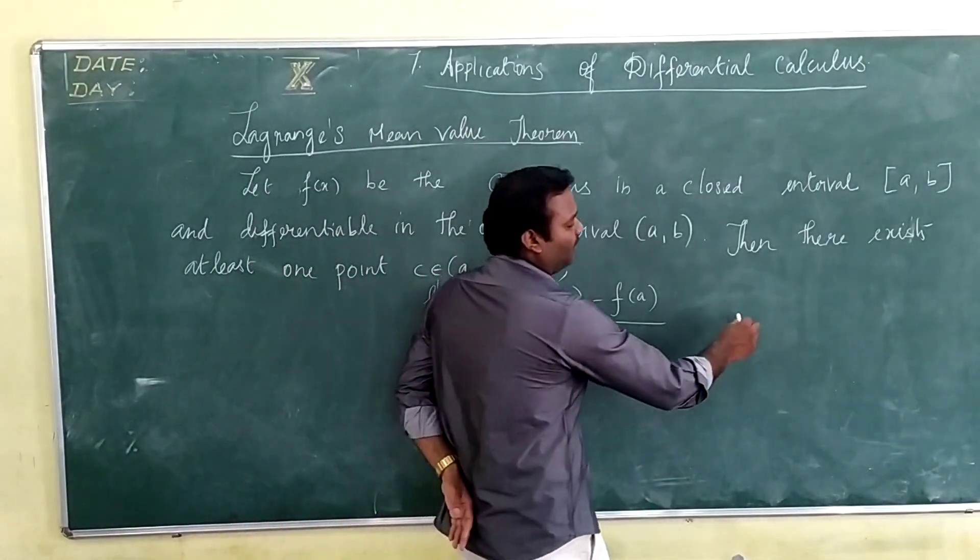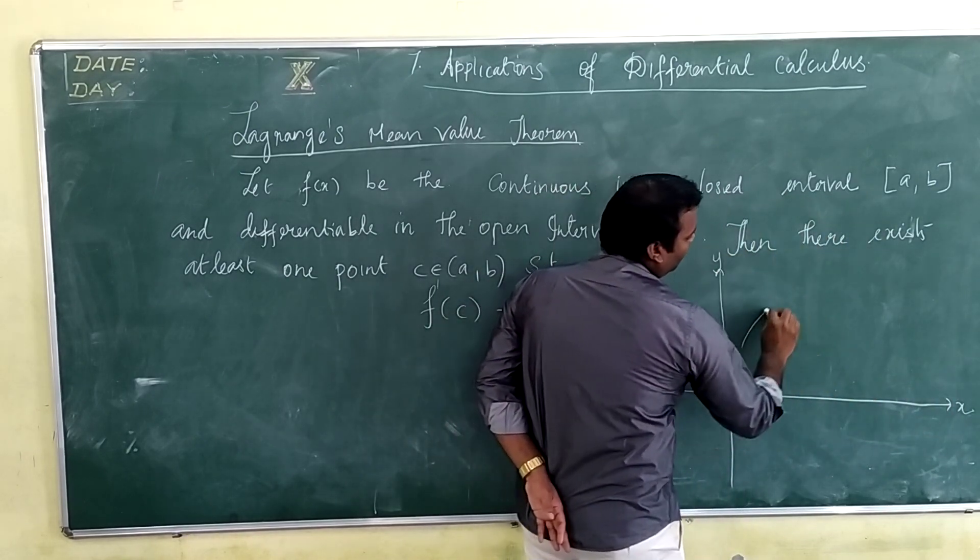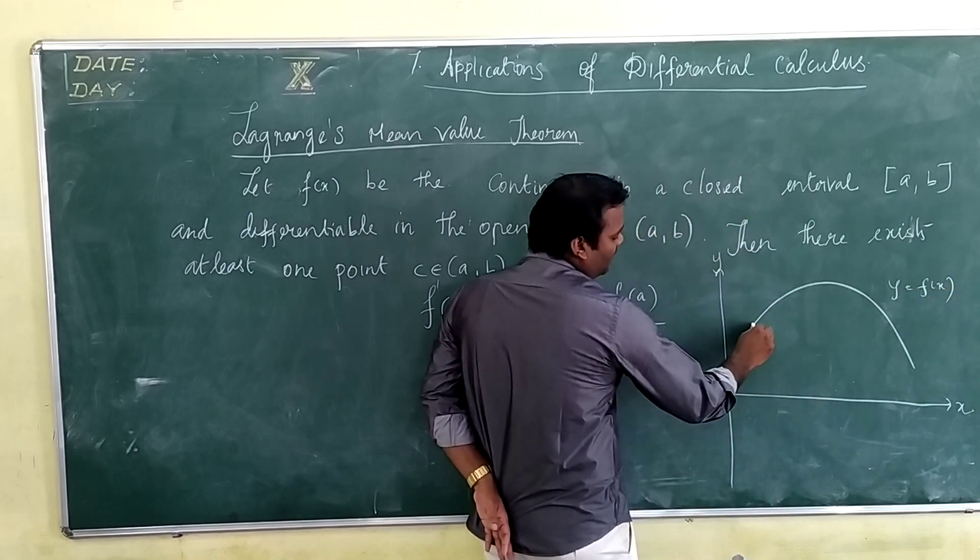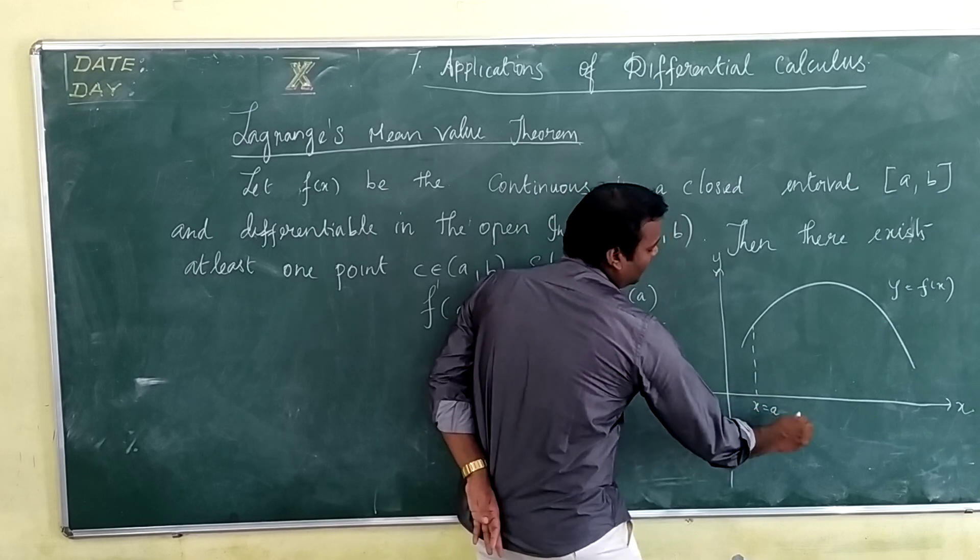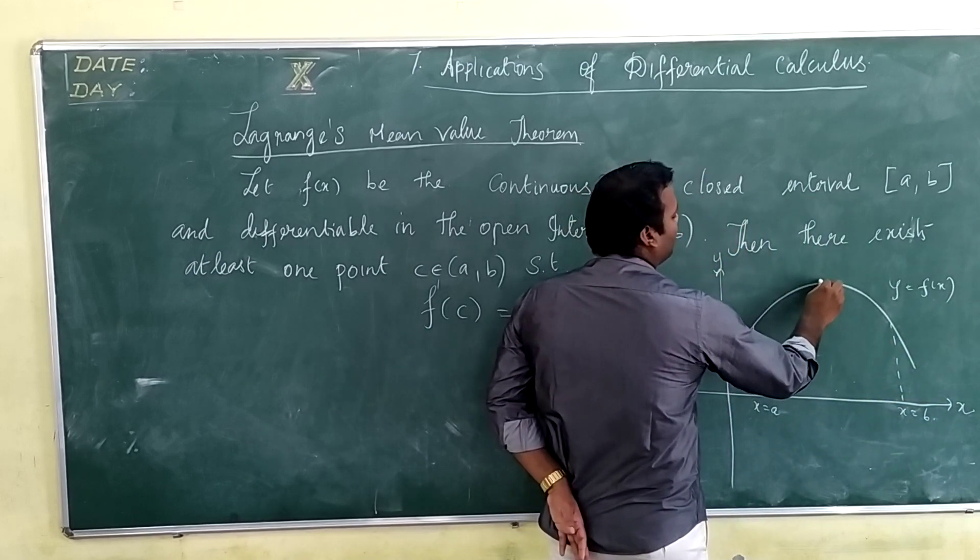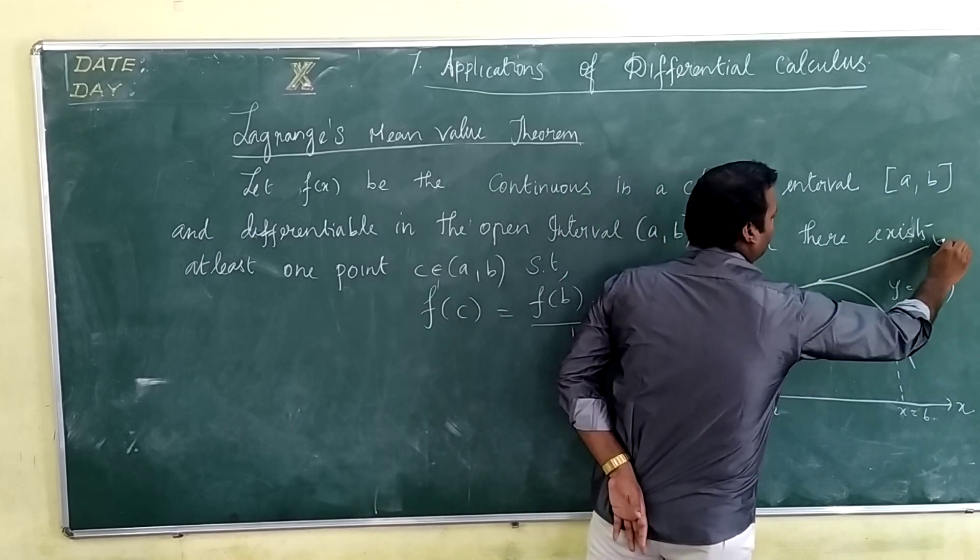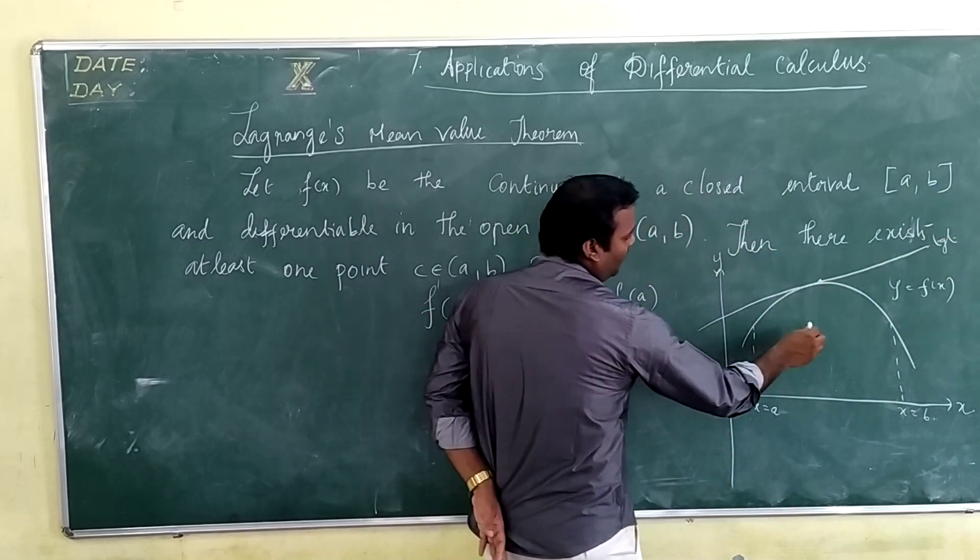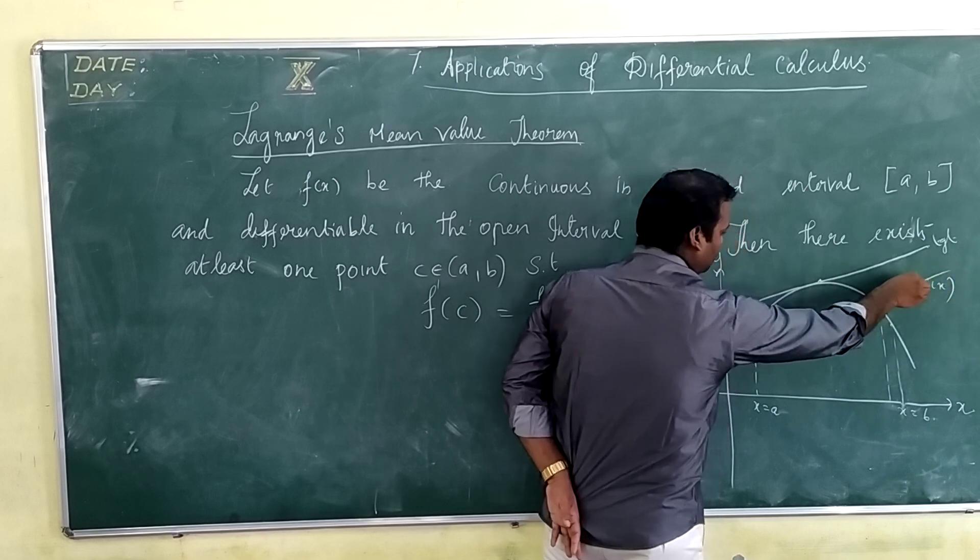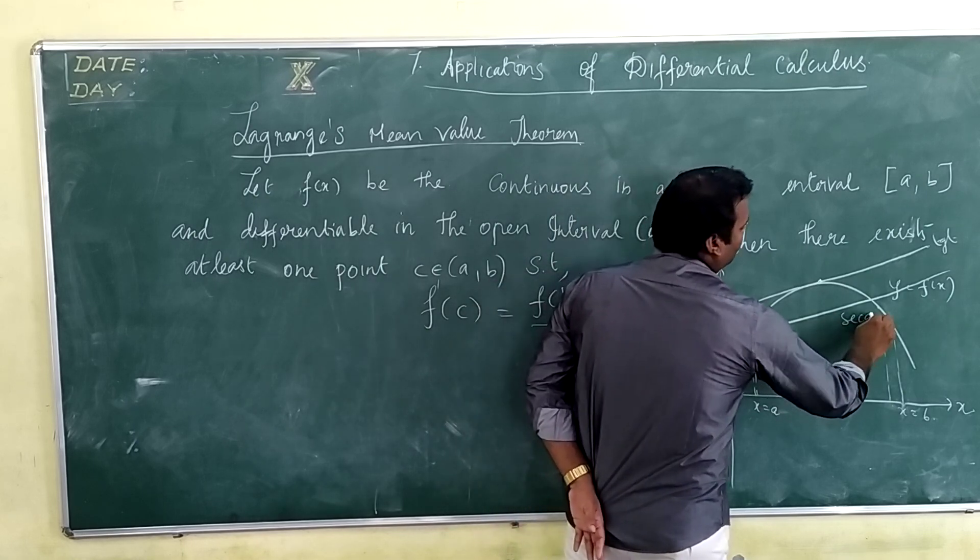So what is the main essence of this theorem? Suppose if you take a function y equals f(x), the given function, in which you are having two points - limiting points x equals a and the other endpoint x equals b. In the beginning you are having a point with the tangent line. So this is the tangent line. And also you are having another line, which is the secant line.